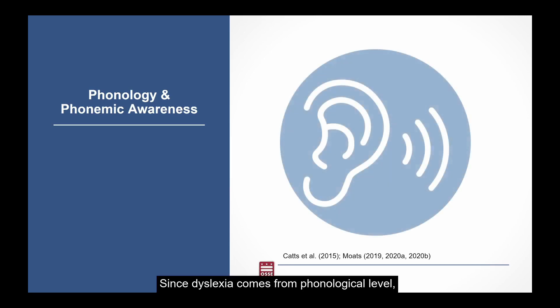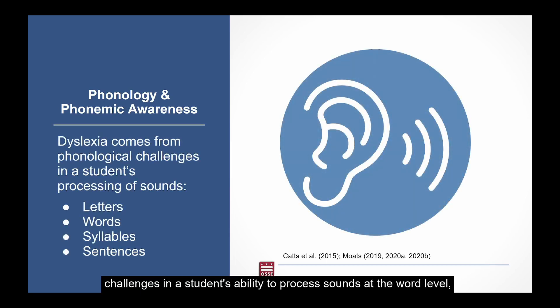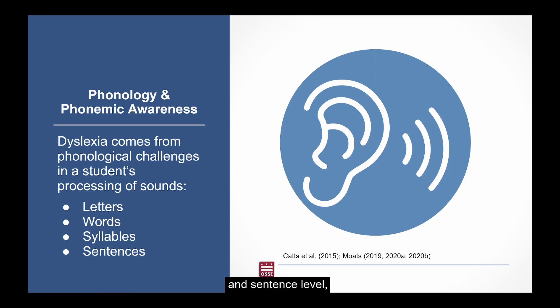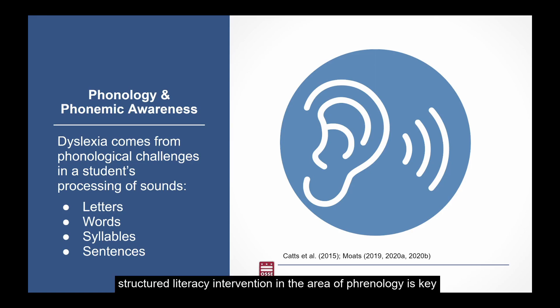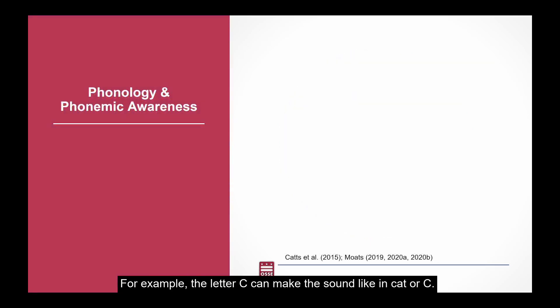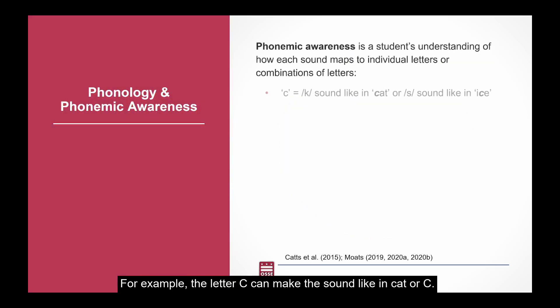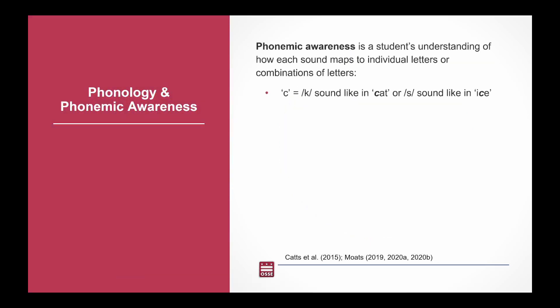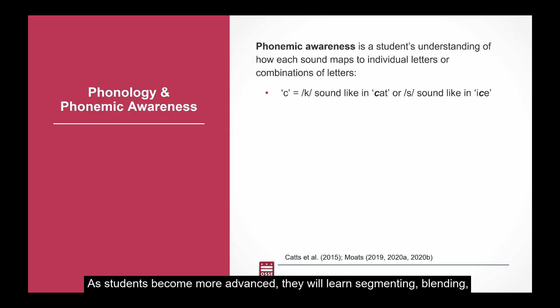Since dyslexia comes from phonological-level challenges in a student's ability to process sounds at the word level, syllable level, and sentence level, structured literacy intervention in the area of phonology is key for students with dyslexia to make progress in reading. For example, the letter C can make the k sound, like in 'cat,' or C can make the s sound, like in 'ice.' As students become more advanced, they will learn segmenting, blending, deleting, and substituting sounds within words to make new words.